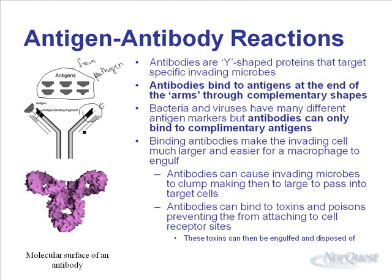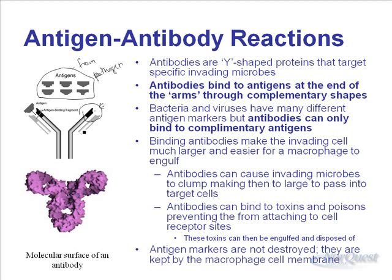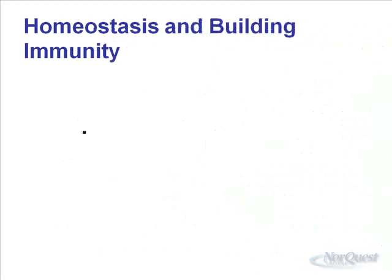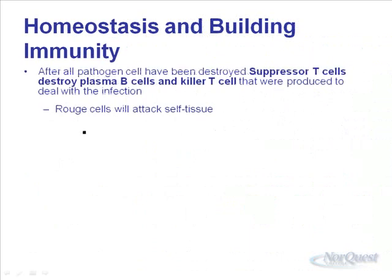Toxins are engulfed by macrophages or monocytes and disposed of. The antigen markers generally aren't destroyed — they're kept by macrophages in their cell membrane. After all of a pathogen has been destroyed, suppressor T cells suppress the immune system from being overly active. They destroy the plasma B cells and killer T cells that were dealing with the infection. Otherwise, these plasma cells and killer T cells can become rogue cells — they get bored and start perforating body cells instead of foreign cells, which isn't a good thing.